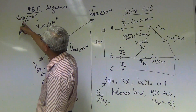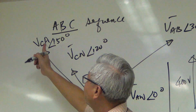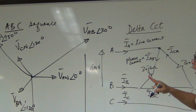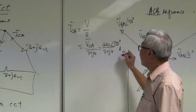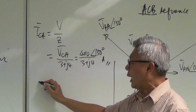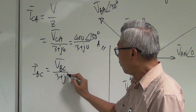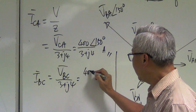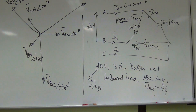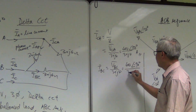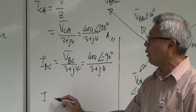Vca is at 150 degrees. So Ica equals 400 at 150 degrees divided by three plus j4. Moving on to Ibc, it equals Vbc divided by three plus j4. From the phasor diagram, Vbc is 400 at minus 90 degrees, divided by three plus j4.